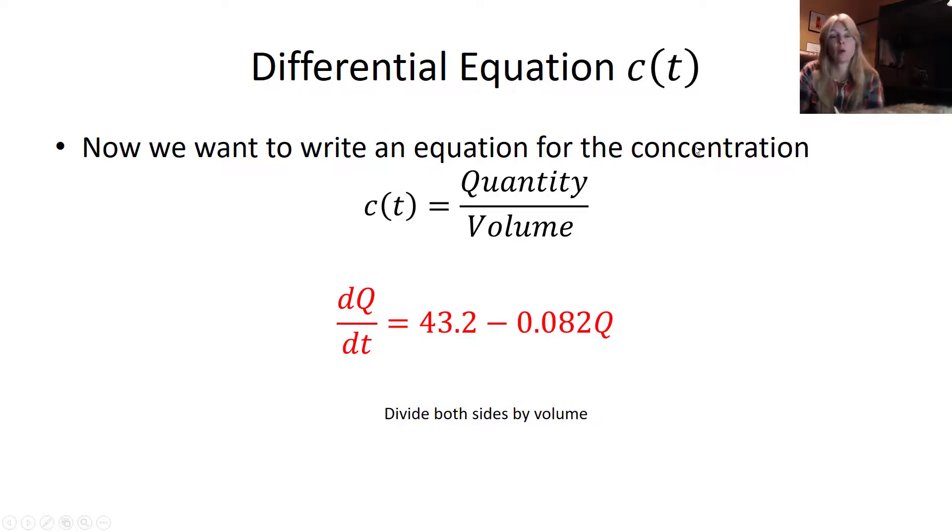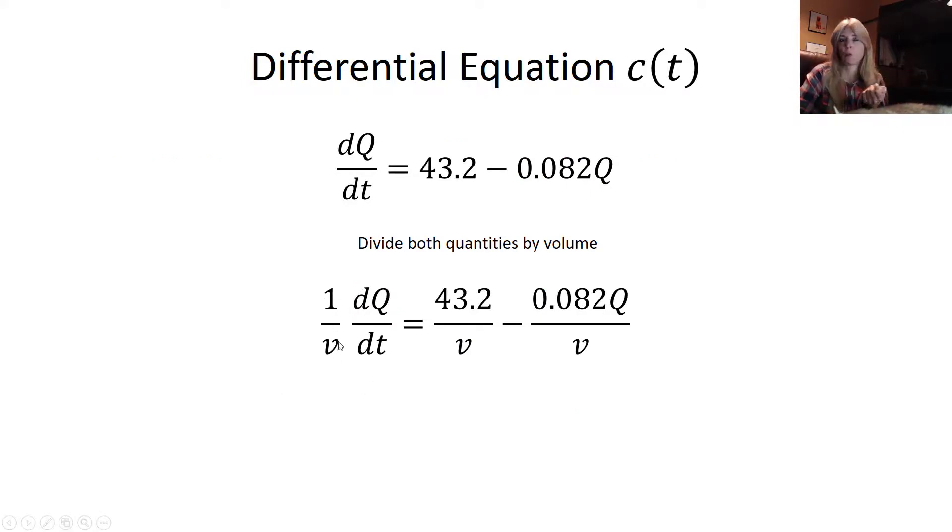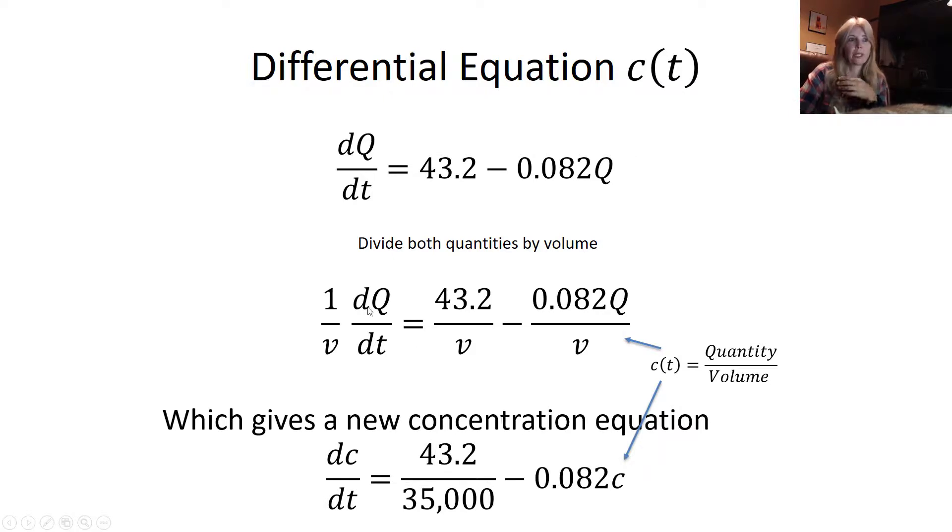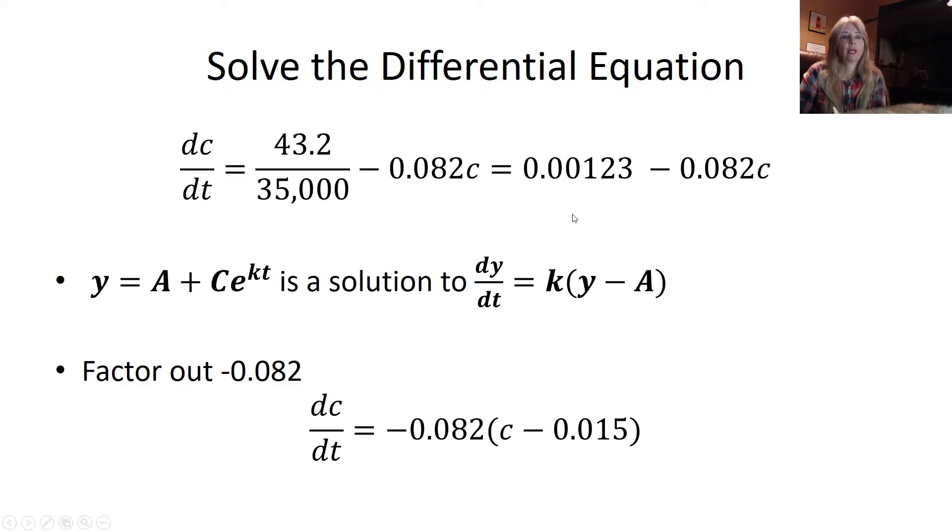You are given concentration equals quantity over volume. So everything that's given to me, my rate in minus my rate out of the quantity that is there. I'm going to divide both sides by volume because they want me to write my equation for concentration. This is written for quantity. So to put this in terms of concentration, I just divided everything by volume. Quantity over volume becomes my change in concentration. My changing concentration over change in time.